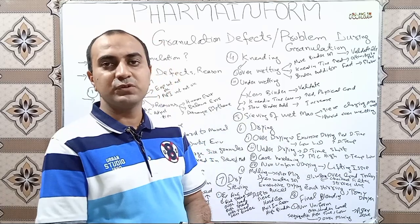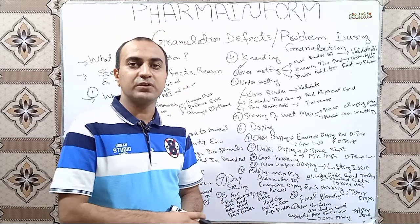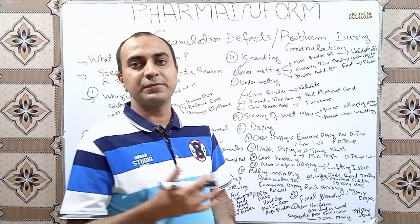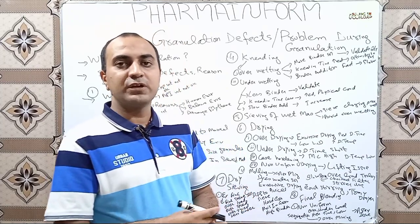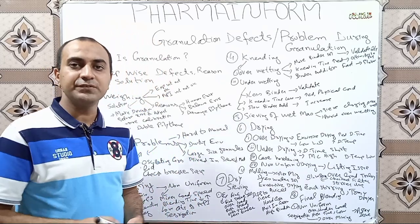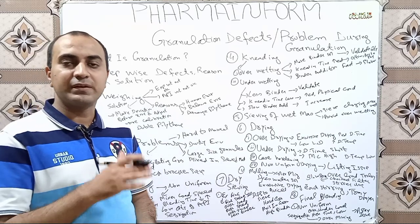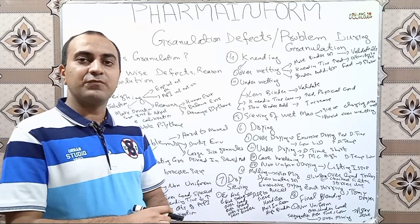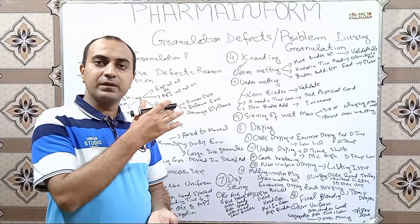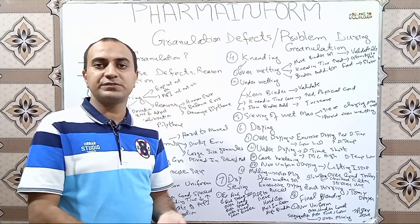So let's start. Granulation is a process in which we convert our fine powders into large agglomerates or granules by using binder solution, solvent, or by the application of pressure. We have two types of granulation: one is wet granulation and the other is dry granulation. If we talk about methods of tablet manufacturing, we have one more method which is known as direct compression.